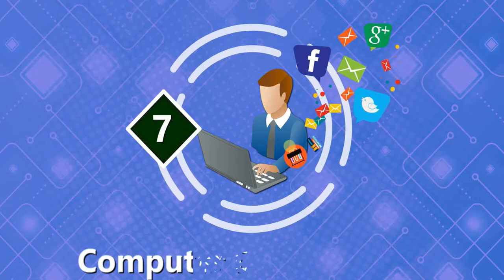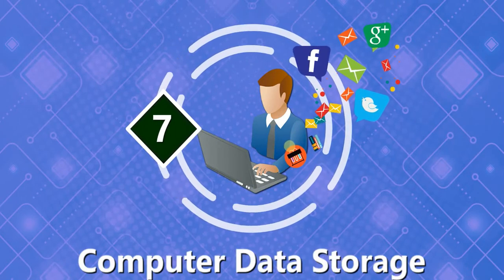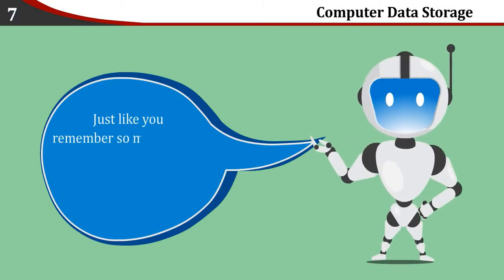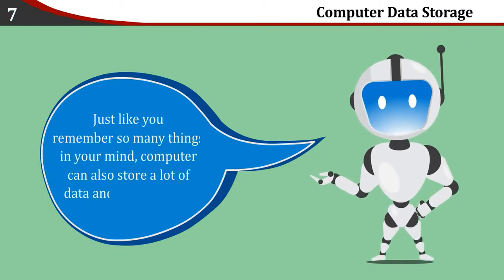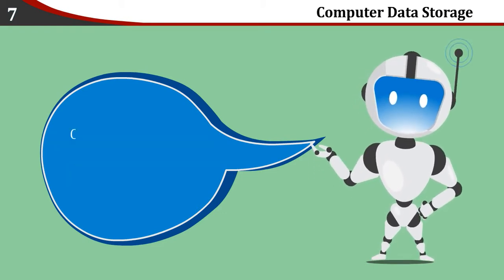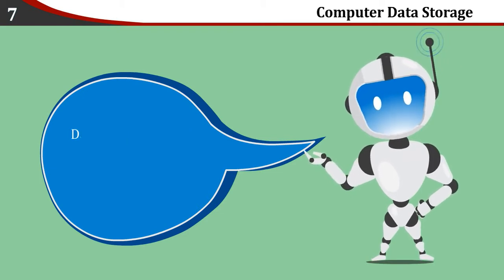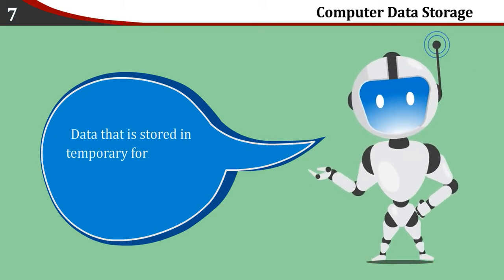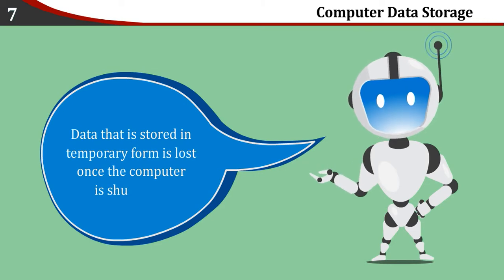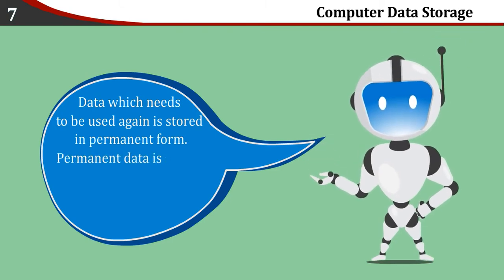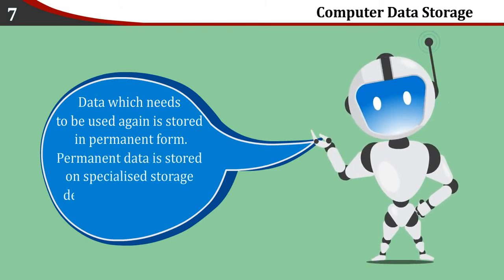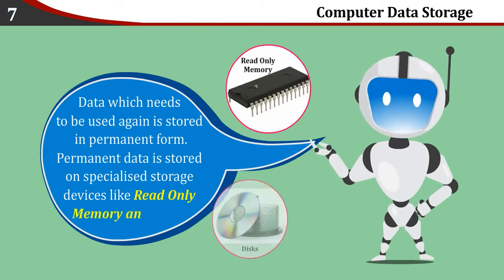Chapter 7: Computer Data Storage. Just like you remember so many things in your mind, a computer can also store a lot of data and information. Computer stores data in two forms: temporary and permanent. Data stored in temporary form is lost once the computer is shut down. Data which needs to be used again is stored in permanent form, on specialized storage devices like read-only memory and disks.